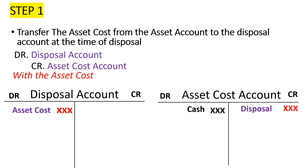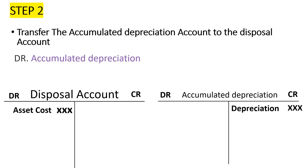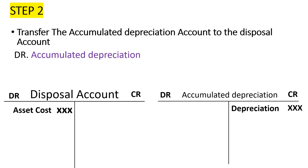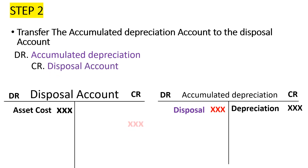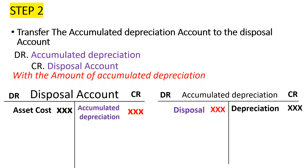The second step is that we are going to take the accumulated depreciation of this asset and remove it from the accumulated depreciation account and bring it to the disposal account. The accumulated depreciation account has its items on the credit side. So we are going to debit the accumulated depreciation account of that asset with the amount, and then credit the asset disposal account with that figure. In so doing, we have transferred the accumulated depreciation to the disposal account.